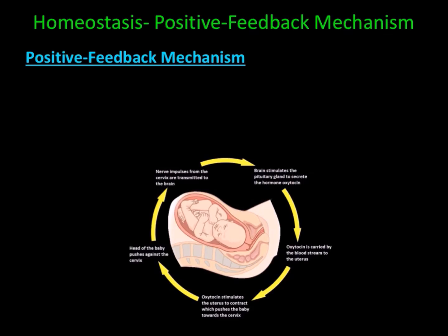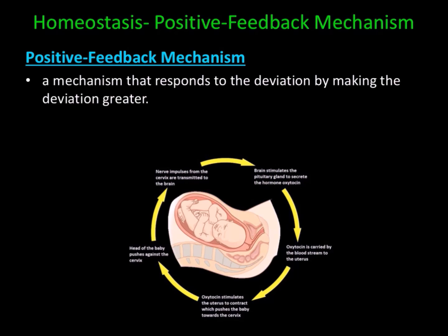The last feedback mechanism that helps maintain homeostasis is positive feedback. A positive feedback mechanism responds to the deviation by making the deviation greater. Positive feedback mechanisms are rare regulatory mechanisms. Childbirth is an example: during childbirth, the head of the baby pushes against the cervix. Nerve impulses from the cervix are transmitted to the brain, which then stimulates the pituitary gland to secrete the hormone oxytocin. Oxytocin is carried by the bloodstream to the uterus, where it stimulates the uterus to contract, pushing the baby further towards the cervix.